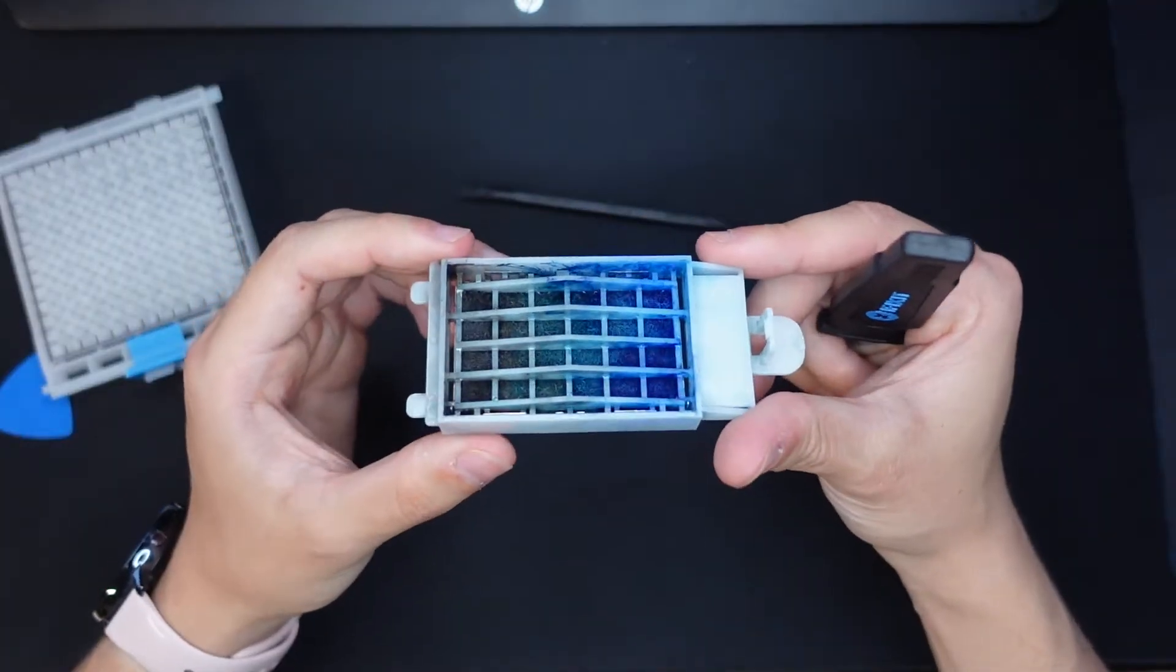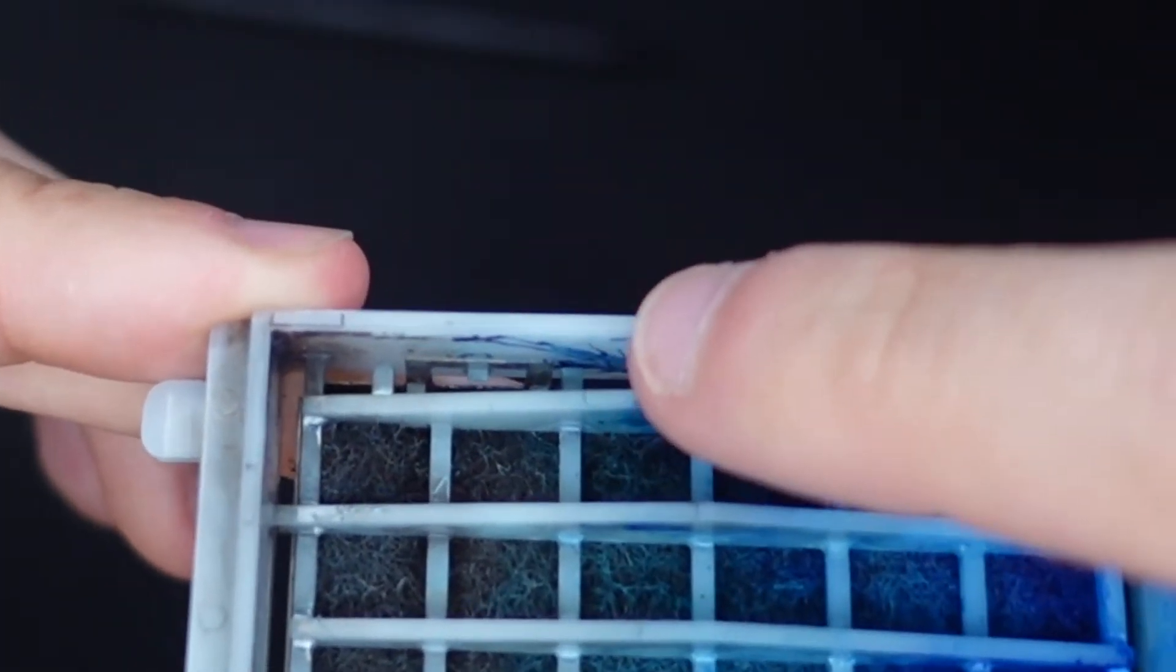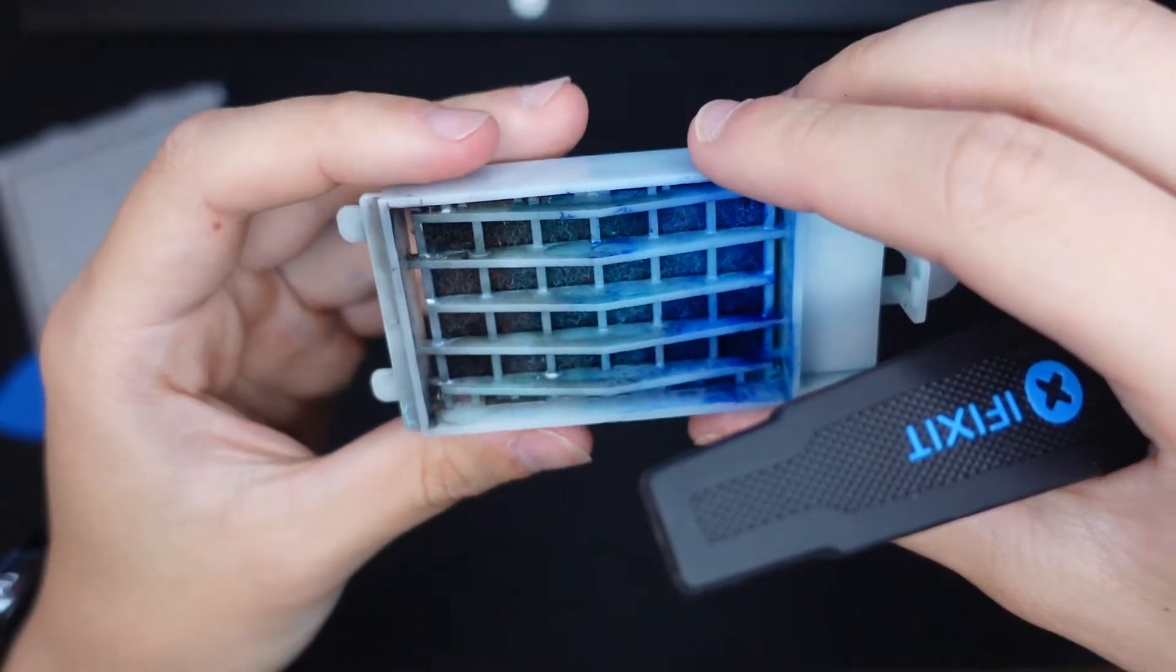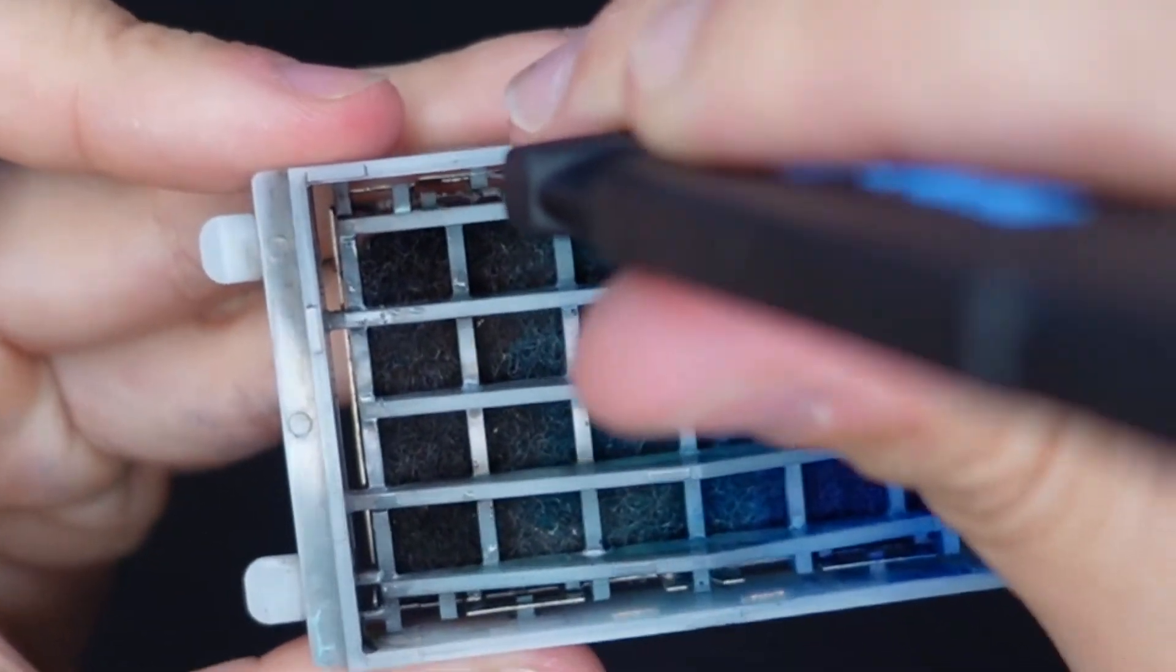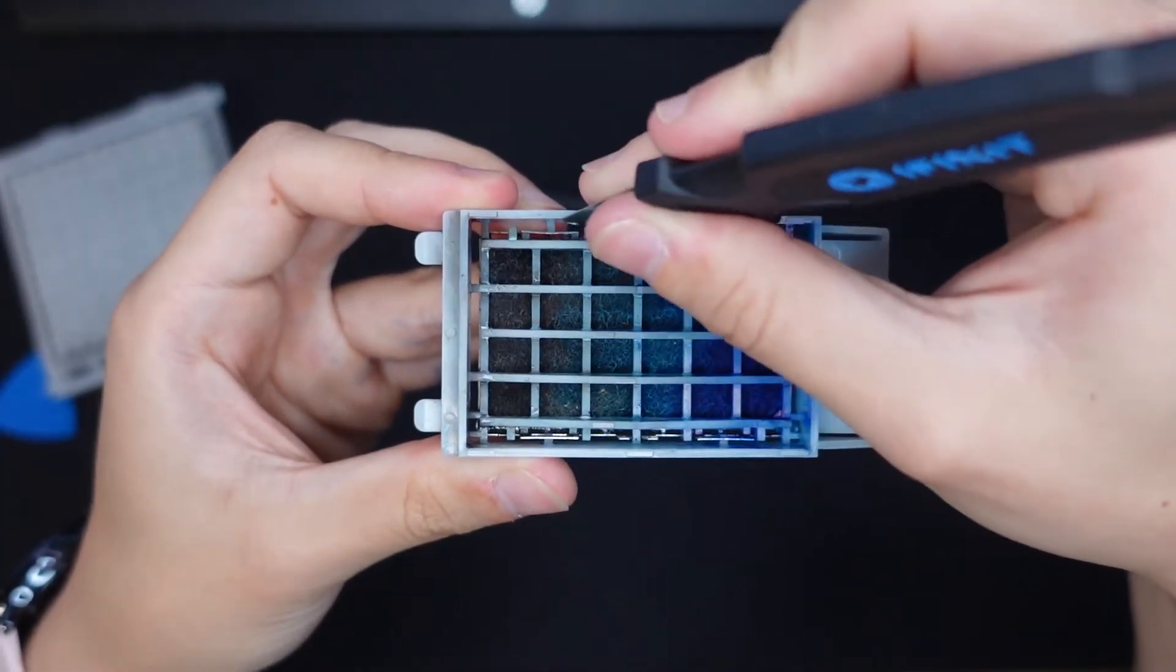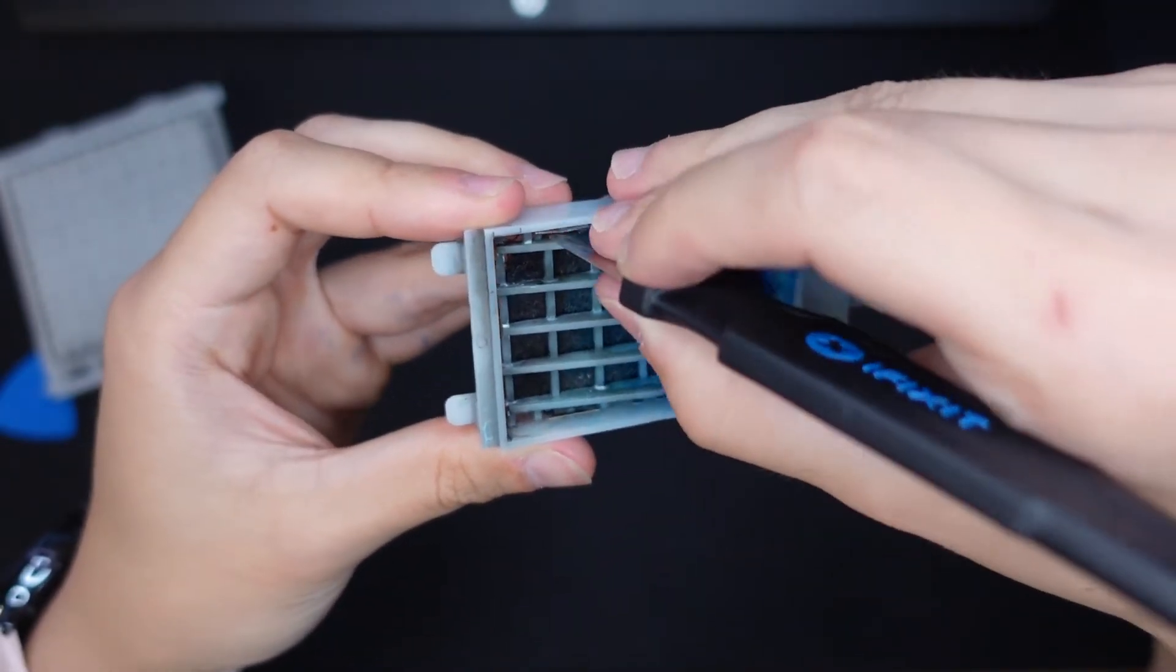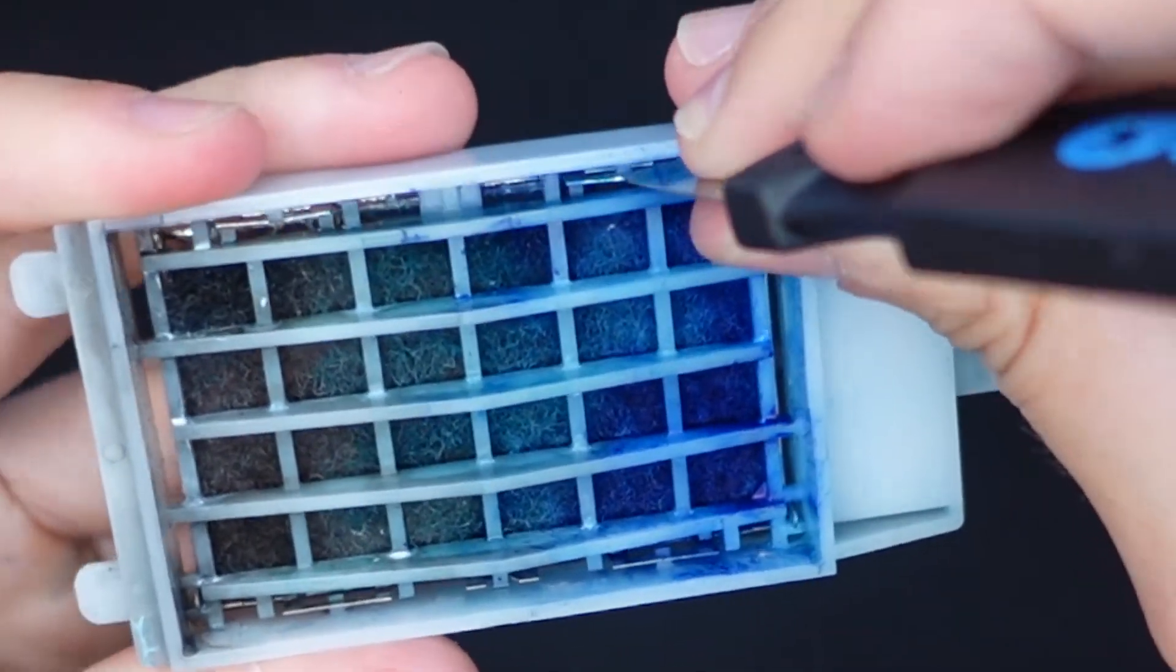So essentially what we are doing is trying to pop these little tabs out from their plastic retainers and it's held down in four places. If you just get underneath that and bend it away from the plastic edge while pushing down, it's going to click outwards.